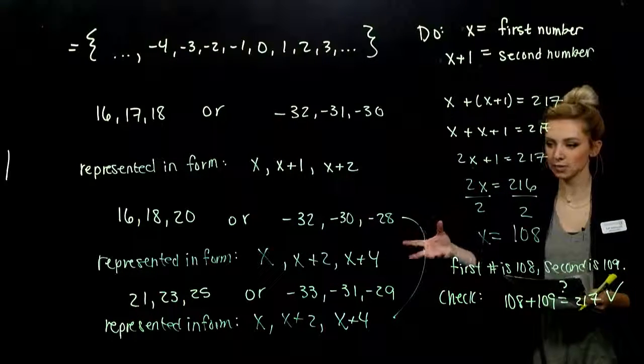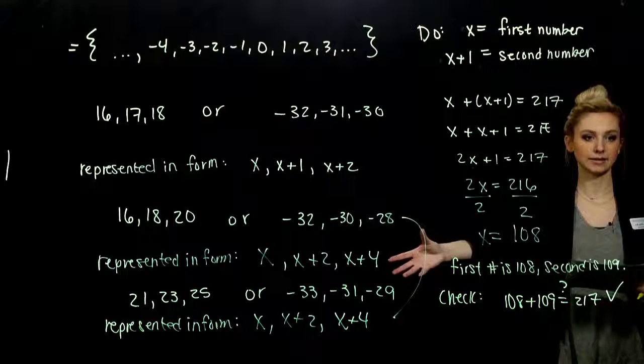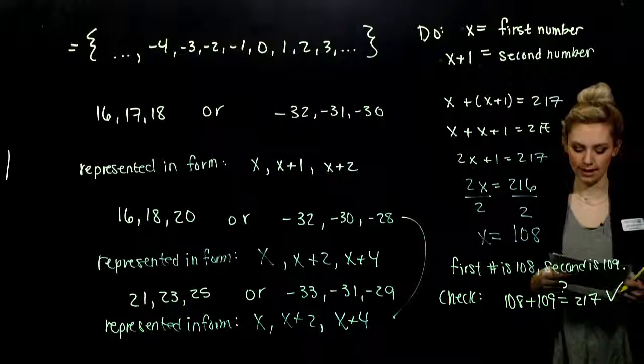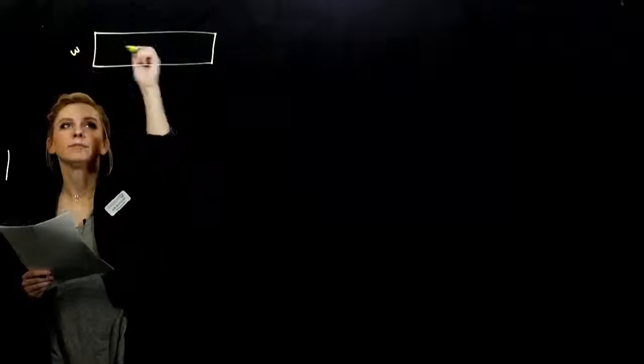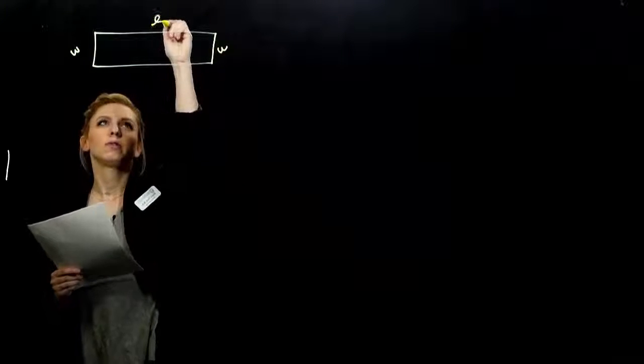So you need to know that term consecutive and be able to represent the next consecutive even or the next consecutive odd. So the next one we'll do the setup together. Once we have that, I'm going to set you loose to solve the problem. So the perimeter of a lacrosse field is 420 yards. The length of the field is 60 yards longer than the width. We want to find the dimensions of the field. Alright. So here's my rectangular lacrosse field. Disproportional, but that's okay. And I have a width, width, length, and length.